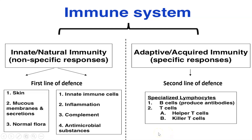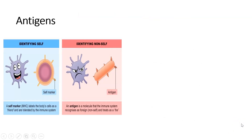Specific immunity uses specialized white blood cells called lymphocytes. These lymphocytes are very sophisticated and they can help to defend your body against viruses. Before we understand how that works, we need to look at some basic information relating to key terminology.